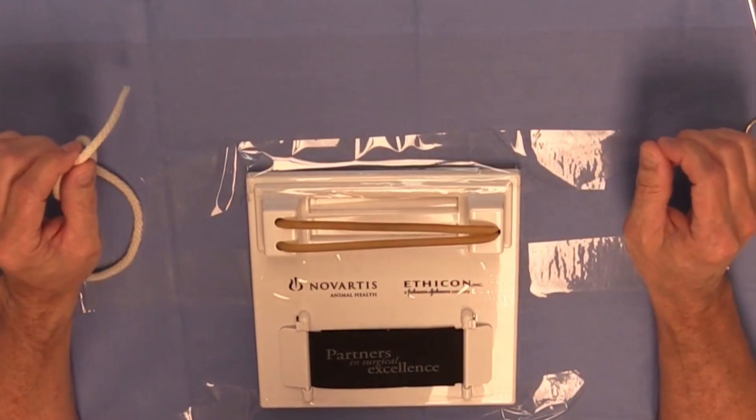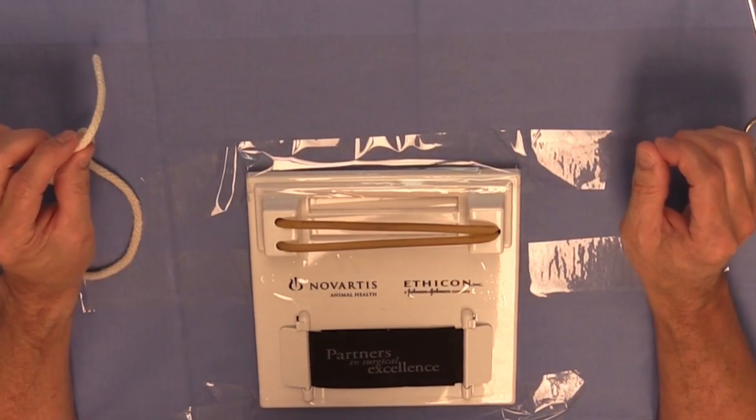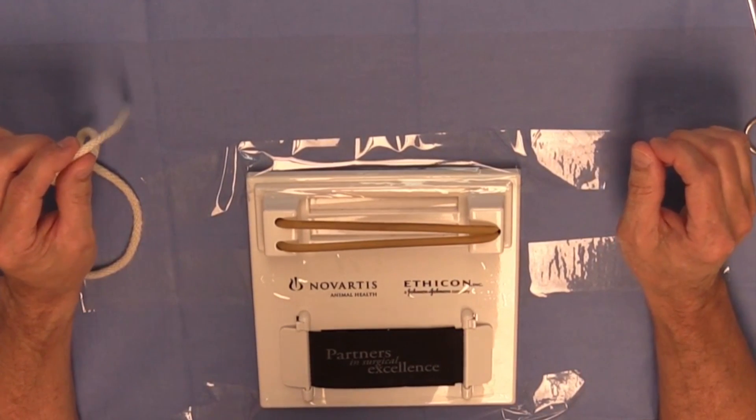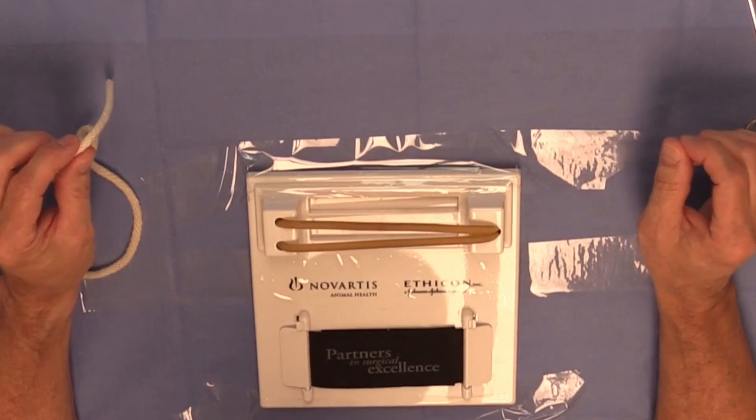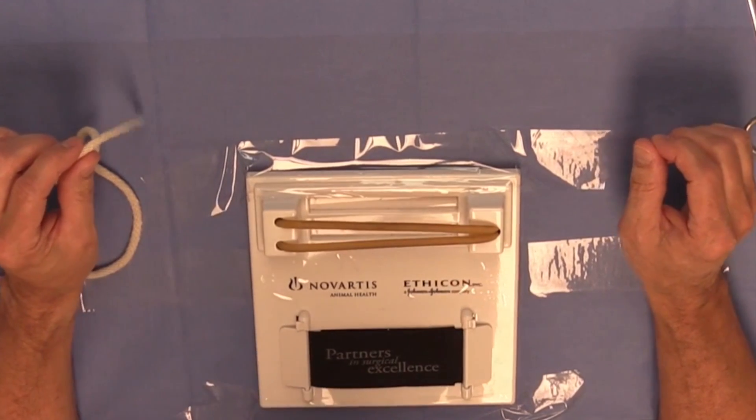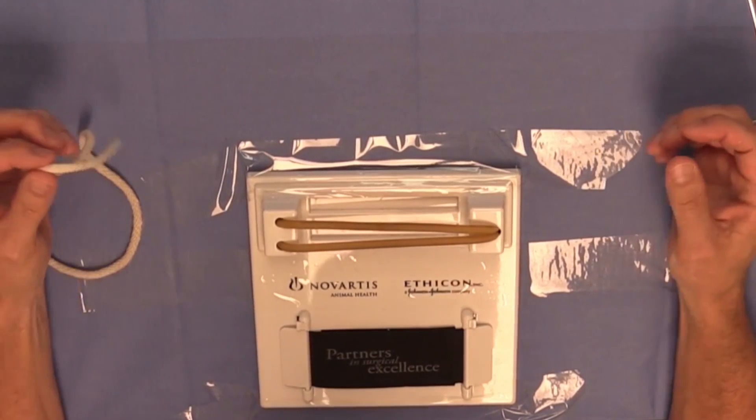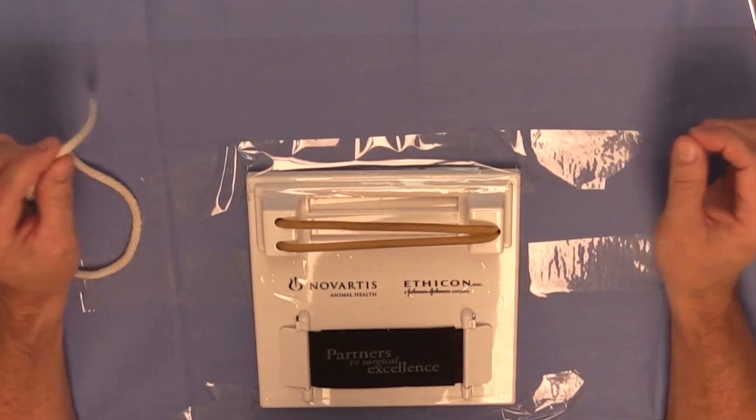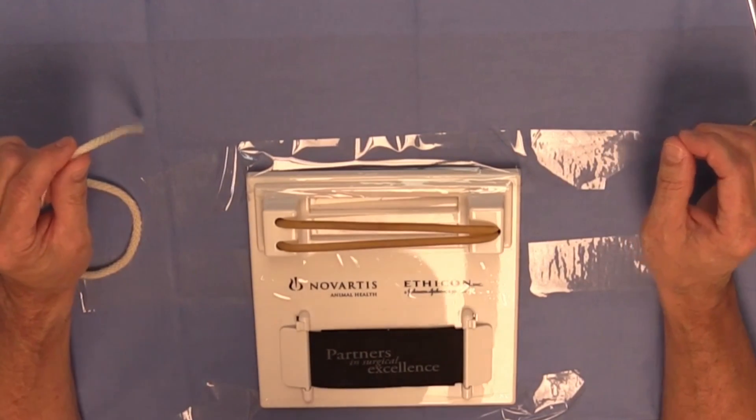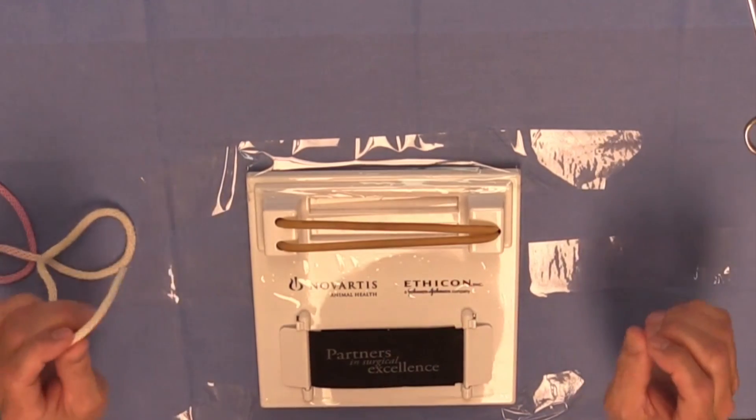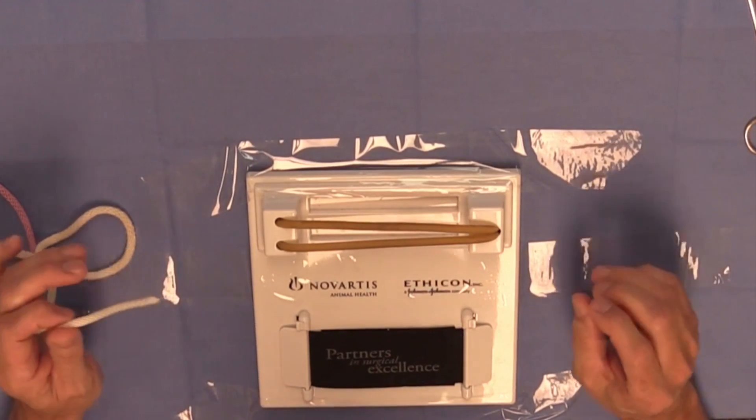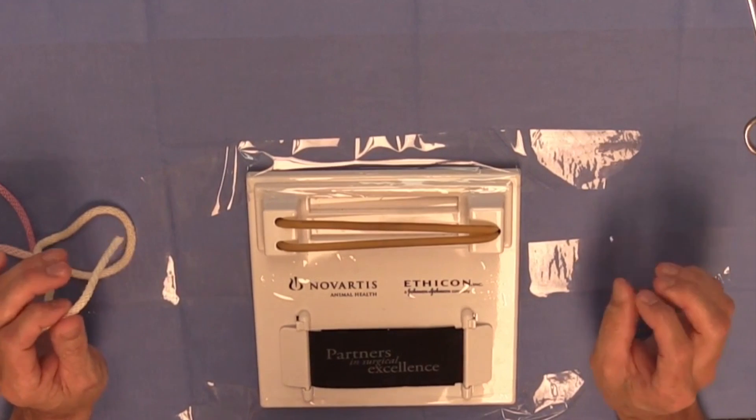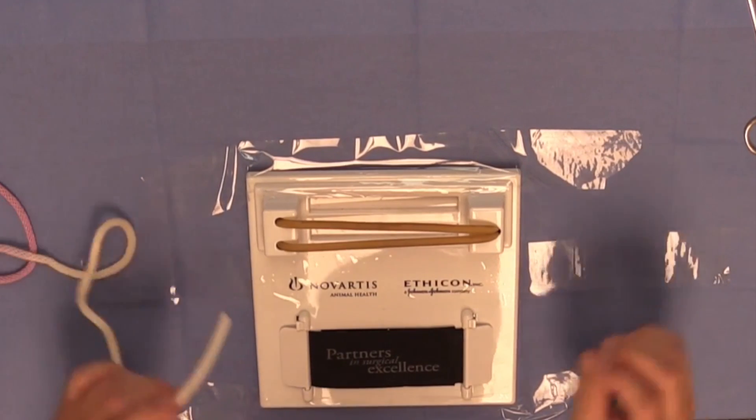I'm now going to demonstrate the surgeon's knot using a one-hand technique. I would caution you that in practice, in general, you will be using a two-hand technique to construct surgeon's knots, but there are two different ways to construct a surgeon's knot using a one-hand technique, and it depends solely on which throw of the one-hand technique that you're going to begin with.